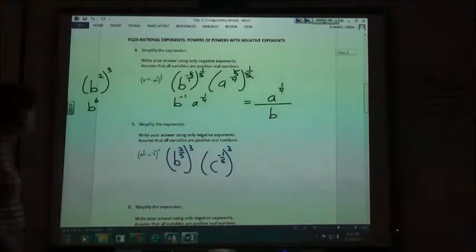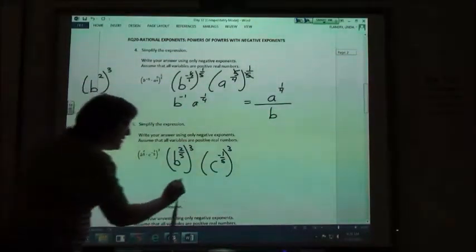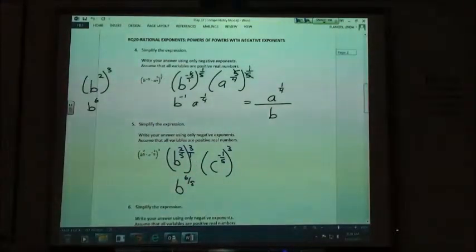b to the six-fifths. Oh, six-fifths. Keep in mind that the three is over one, right? Oh, okay. So it would be six over five.